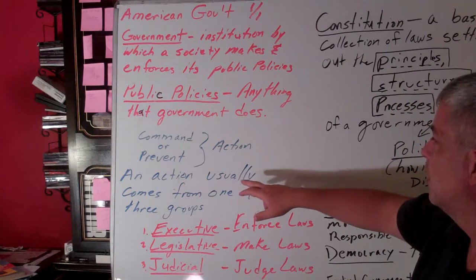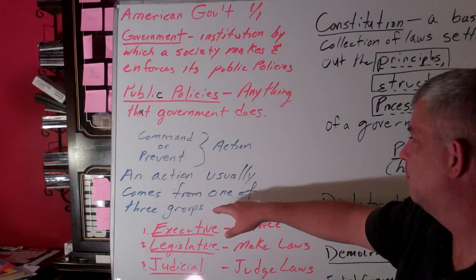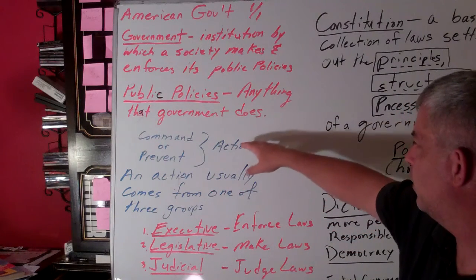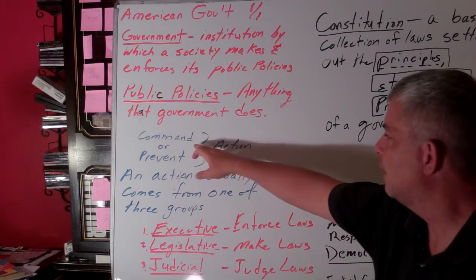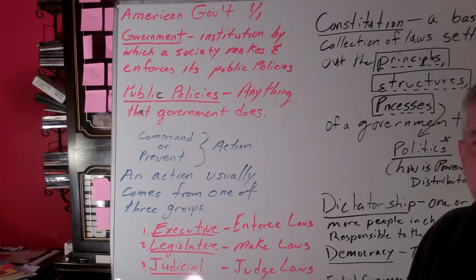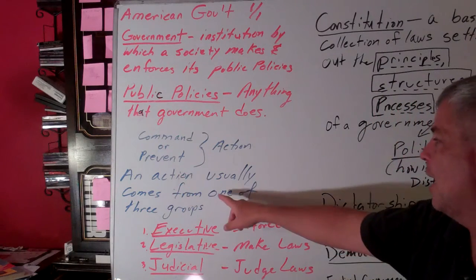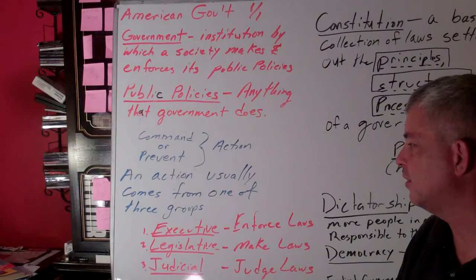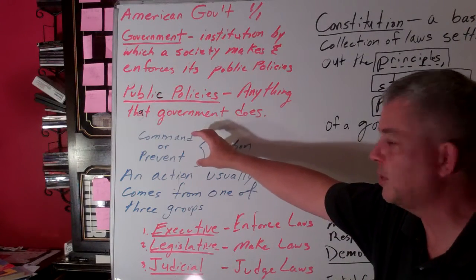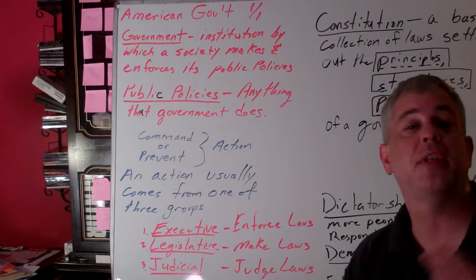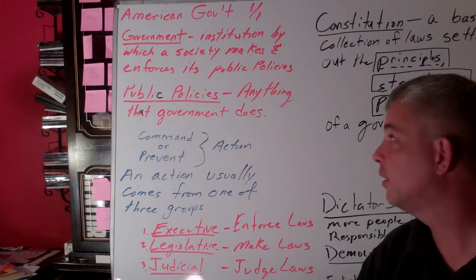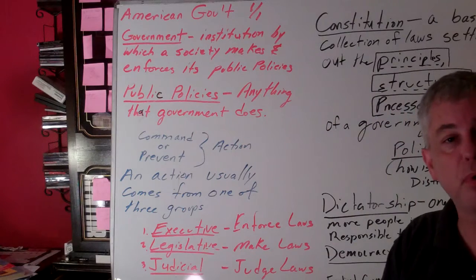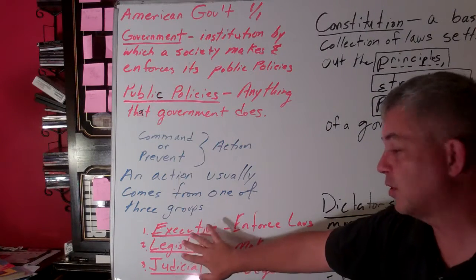So what kind of actions do governments actually do? They command or they prevent different kinds of things, and action usually comes from one of these three groups. They can tell people what to do or they can stop things. Almost everything in government — this institution — is really broken down into these three pieces.